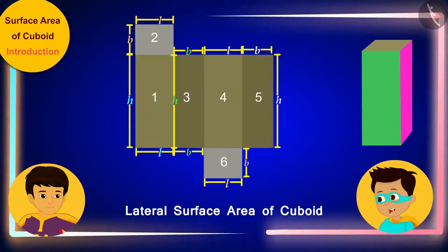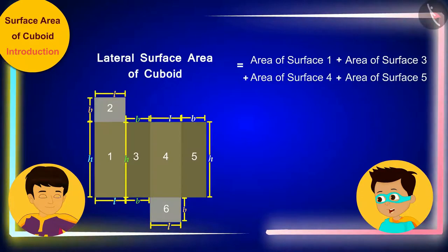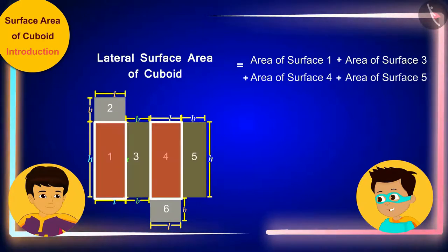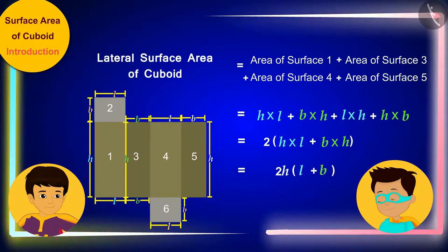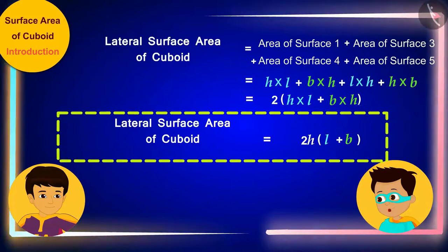This is very interesting. This means that the lateral surface area of the cuboid of length L, width B, and height H will be equal to the sum of the area of these four rectangular surfaces. But there are also two pairs of congruent surfaces here. So we can write it in this way as well.